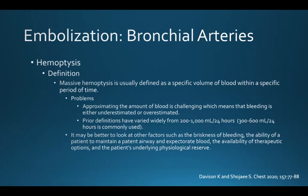It's important first for us to define massive hemoptysis, because those who perform bronchial artery embolization procedures are often asked to help people experiencing massive hemoptysis. This is usually defined as a specific volume of blood within a specific period of time, but there are problems with that. First, approximating the amount of blood is challenging, meaning bleeding is either underestimated or overestimated. Secondly, the most common definition for massive hemoptysis is 300 to 600 milliliters per day, but prior definitions have varied widely from as low as 200 milliliters per day to 1,000 milliliters per day.